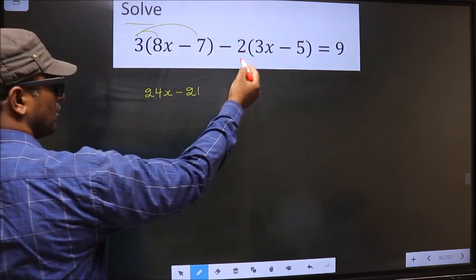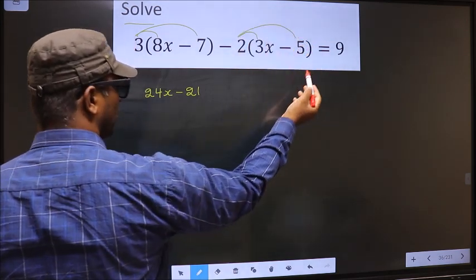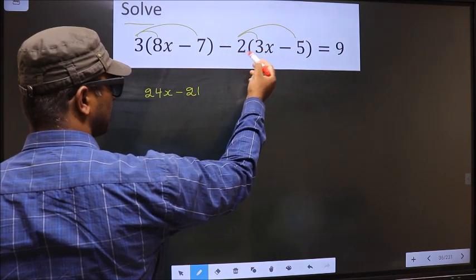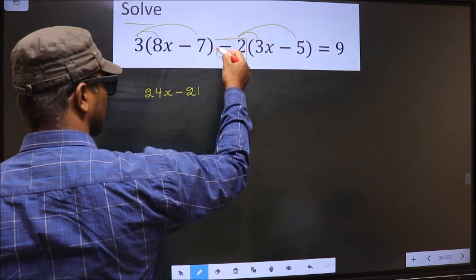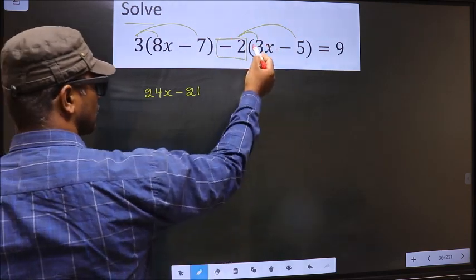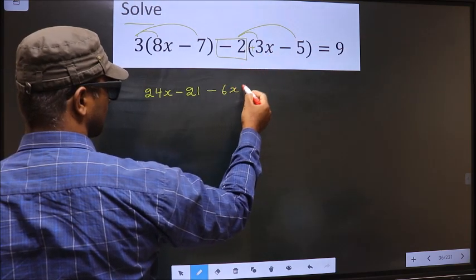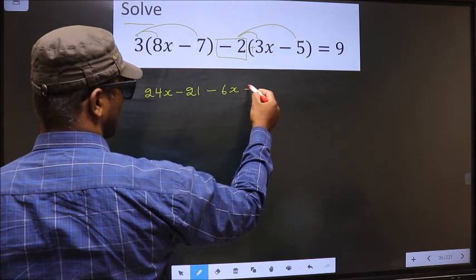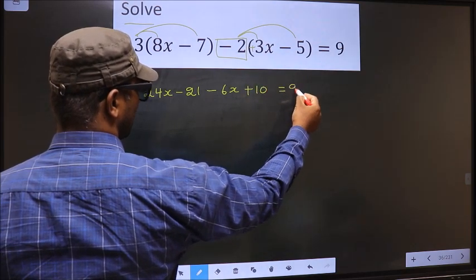Now here also you should open up the brackets. The mistake what many do is they multiply with 2, whereas you should multiply by minus 2. You don't do that mistake. So minus into plus, minus 2 into 3x is 6x. Minus into minus plus, 2 into 5 is 10 equal to 9.